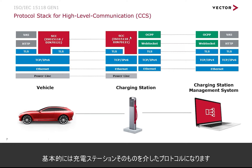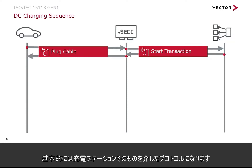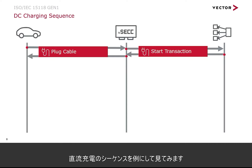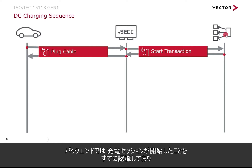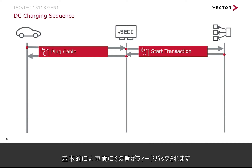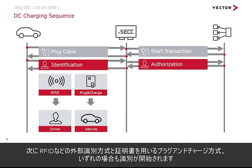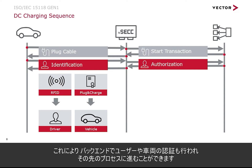That value added service is basically just bridged through the charging station itself. Let's look in more detail at a DC sequence as an example of how that works. The car arrives, the cable is plugged in, and then this start transaction is handed over to the back end so the back end is already aware that a charging session has started — acknowledged backwards to the vehicle. Then identification starts, whether it's RFID or certificate-based for plug-and-charge, allowing the back end to authorize the user or vehicle.